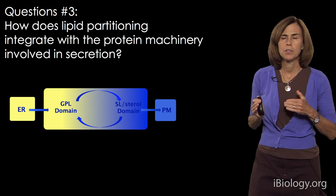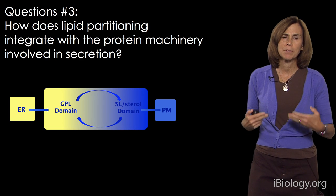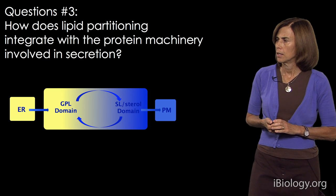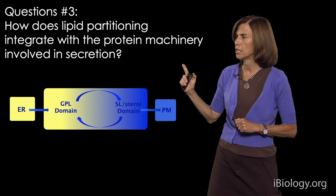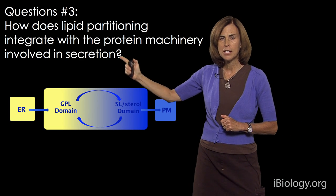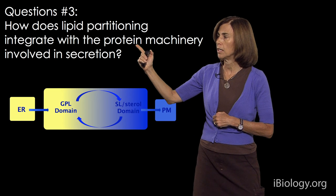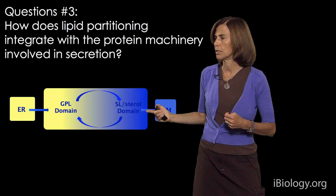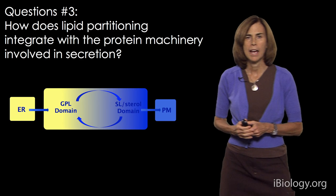A third question — perhaps the most profound — is whether this lipid partitioning can be integrated with protein machinery to play a key role in how the secretory pathway sorts and traffics proteins. We know a lot about the protein machinery driving secretory trafficking, but we don't know how that machinery is influenced by lipid gradients, nor how the protein machinery itself can potentially impact lipid partitioning and segregation across the secretory pathway in order to allow newly synthesized proteins to move efficiently through the system out to the plasma membrane.